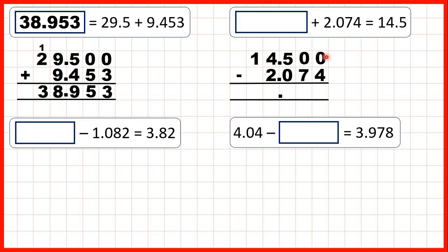Now, we can't do 0 minus 4, and if we go to the left, we have a 0. So, we go all the way over to our tenths column, 1 less, 1 in front, and then again, 1 less, 1 in front. Now, 10 minus 4 is 6, 9 minus 7 is 2, 4 minus 0 is 4, 4 minus 2 is 2, and 1 minus nothing is 1, so our missing number is 12.426.